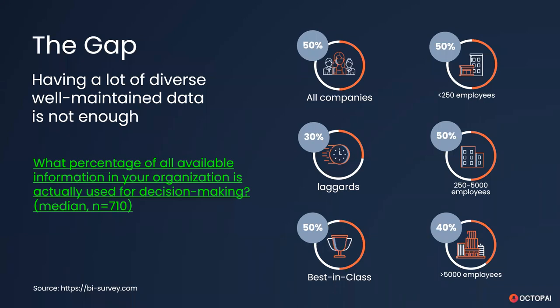When BI Survey — the one that provided all these data points on the screen — decided to do this poll of 710 companies, you would have expected the companies to report favorably when asked what percentage of their decisions are data-driven. Unfortunately, this is not necessarily the case. For half the companies, and half of their decisions, the gut-driven decision is king — especially in companies over 5,000 employees, where only 40% of decisions were actually driven by data.